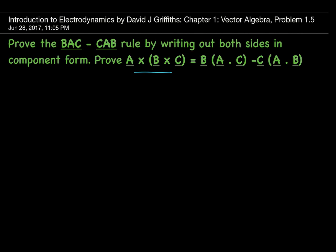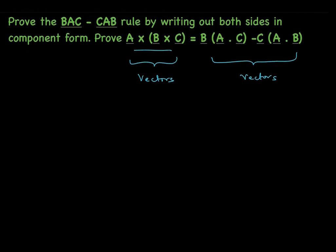Now how do we do this? This is a very tedious and lengthy problem, so we'll work out a smaller version of the entire problem. We know that both the LHS and the RHS are vectors. When we write them in the Cartesian coordinate system, they will have an X component, a Y component, and a Z component.